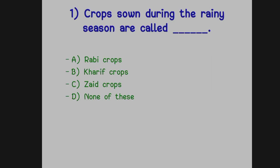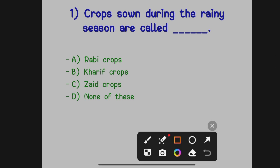The first question: crops grown during the rainy season are called dash. Option A: Rabi crops. Option B: Kharif crops. Option C: Dread crops. Option D: None of these. The correct answer is Option B, Kharif crops.